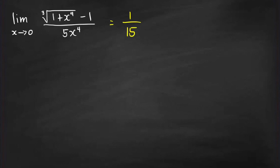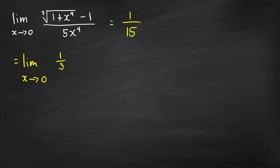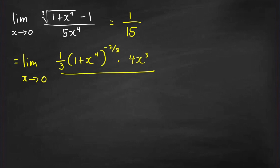If we want to verify that this is indeed the correct limit of this expression as x goes to 0, then we can apply L'Hôpital's rule. Applying L'Hôpital's rule, this will be equal to the limit as x goes to 0 of the quotient of the derivatives of the numerator and denominator. Taking the derivative of the numerator, we get 1 third times (1 plus x raised to 4) with the power becoming 1 third minus 1, which is negative 2 thirds, then times the chain rule times the derivative of the base which is 4x cubed. And then all over the derivative of the denominator, which is equal to 20x cubed.